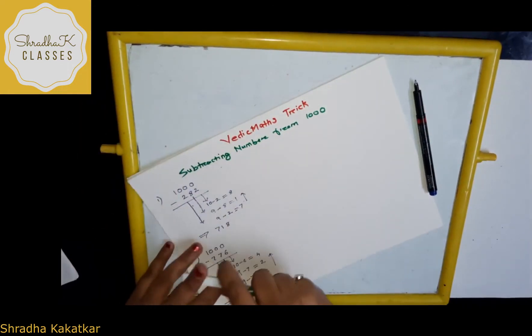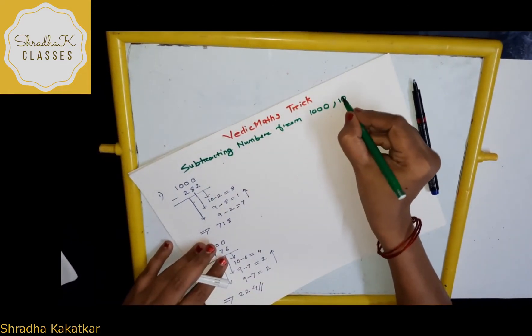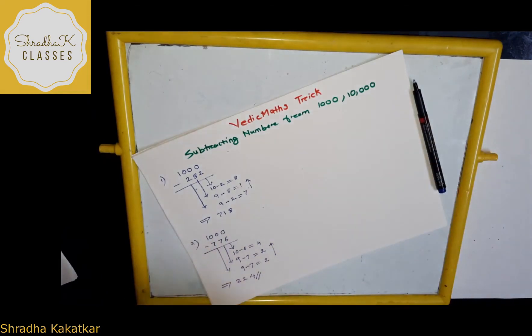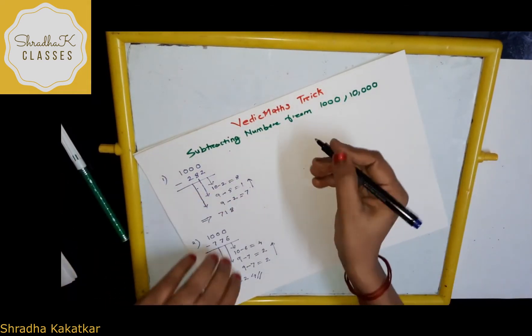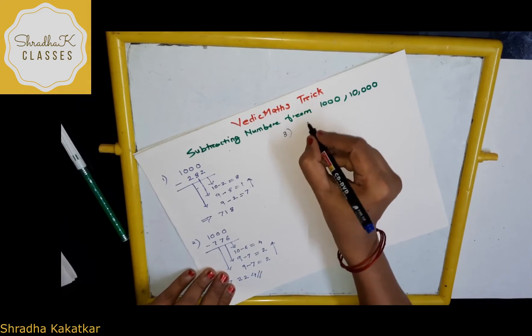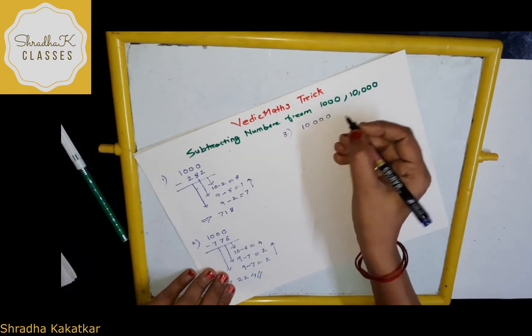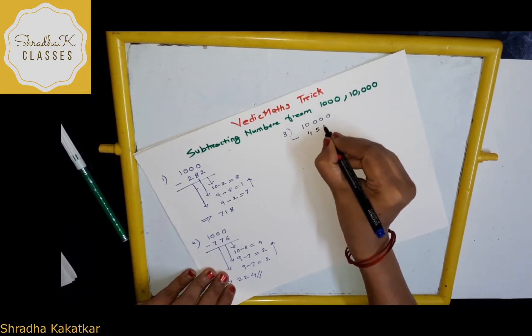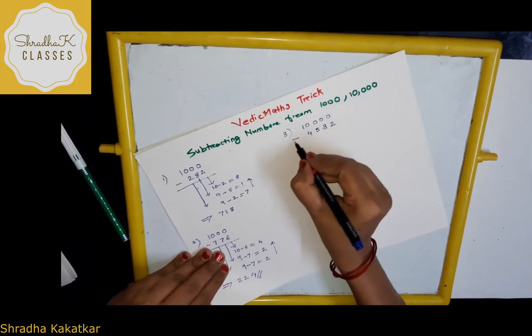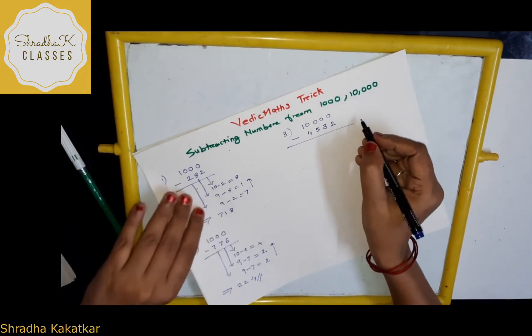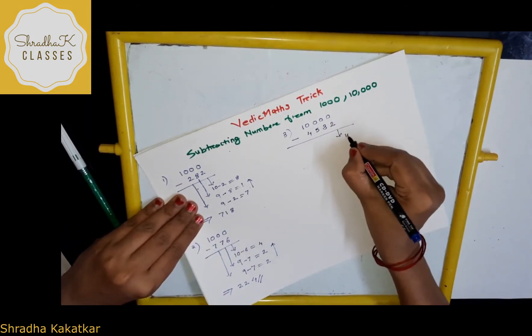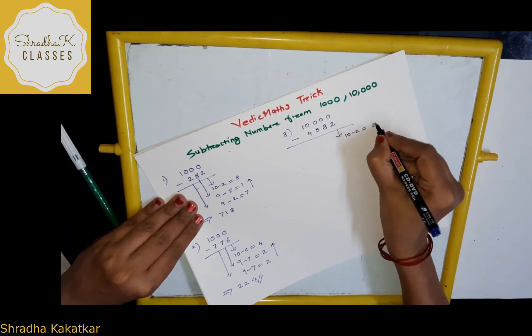What I will do, I will show you this also, 10,000 also. Let's take number 10,000 minus 4, 5, 3, 2. So, what we will do now again here, same procedure, 10 minus 2 is 8.